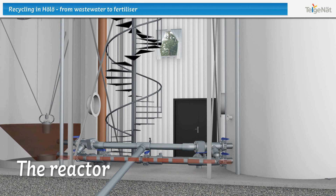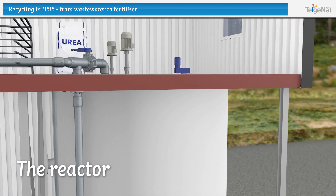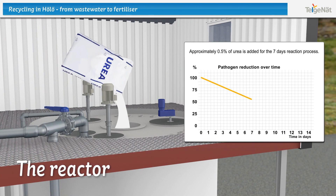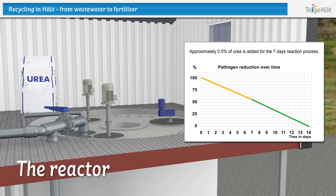A pipe connecting the reactors provides an opportunity to transport microbiological inoculants between the reactors in order to speed up the process. A small amount of concentrated urea is added in the reactor. After an additional seven days, all contagion agents have been removed through this process.